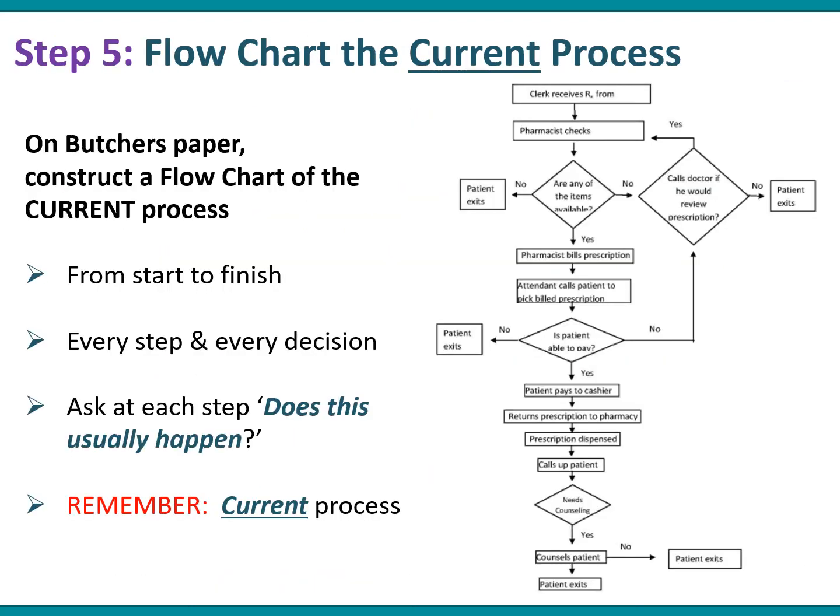Step number five is where you flow chart the current process. On a piece of butcher's paper, construct a flow chart showing how the process flows — particularly how the patient flows through the system from start to finish — thinking in a logical sequence for every step and every decision made. At each step, ask yourself: does this usually happen? Remember to flow chart the current process, even with its problems and bottlenecks. Later you can flow chart the improved process, but at this stage, map the current process with the entire interdisciplinary project team.